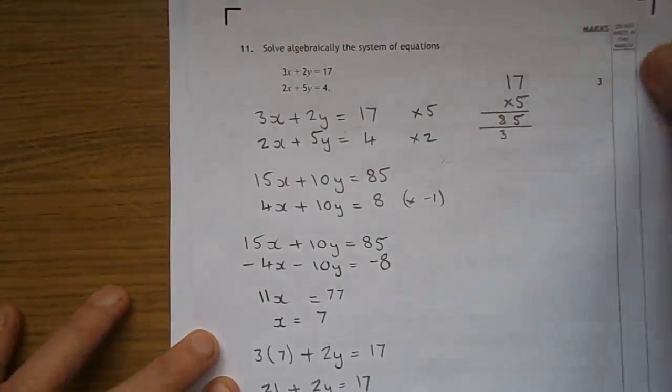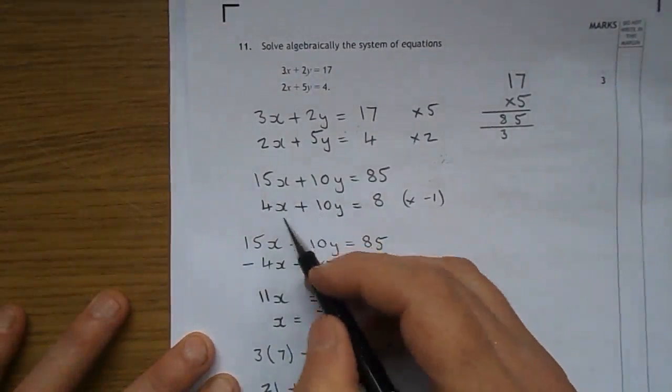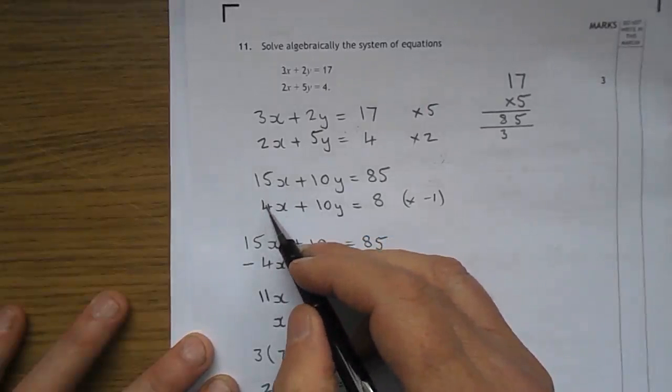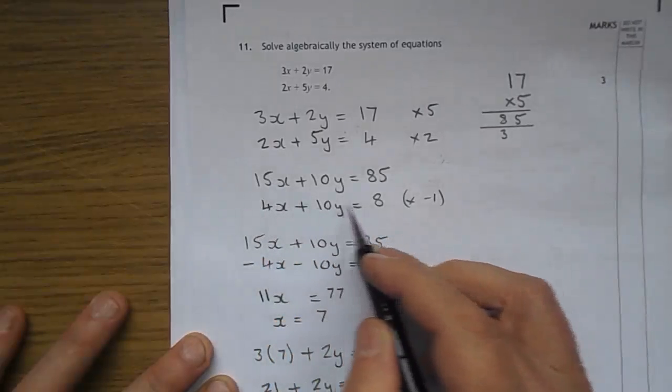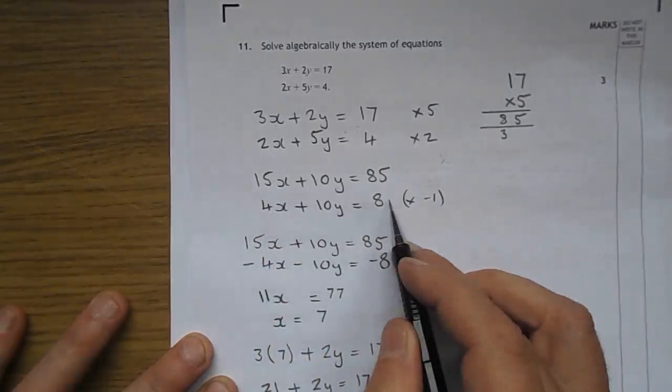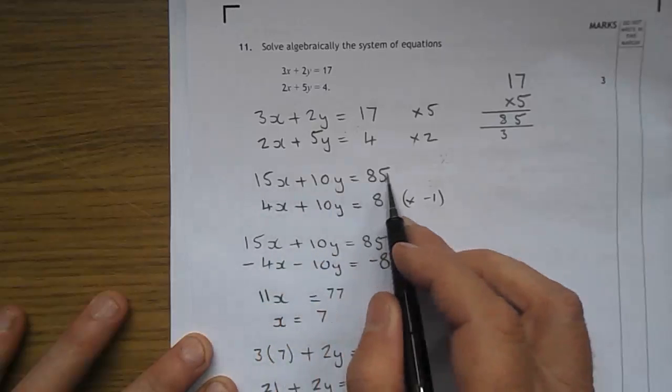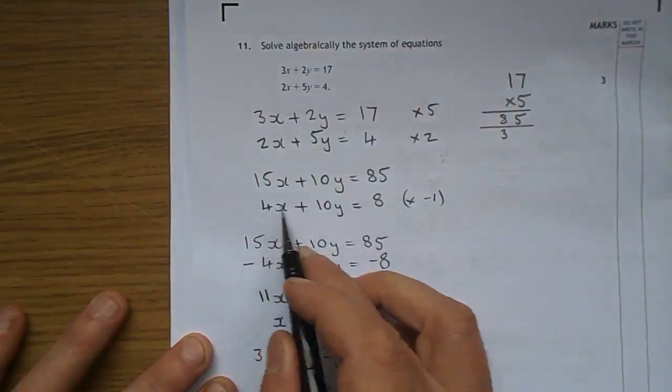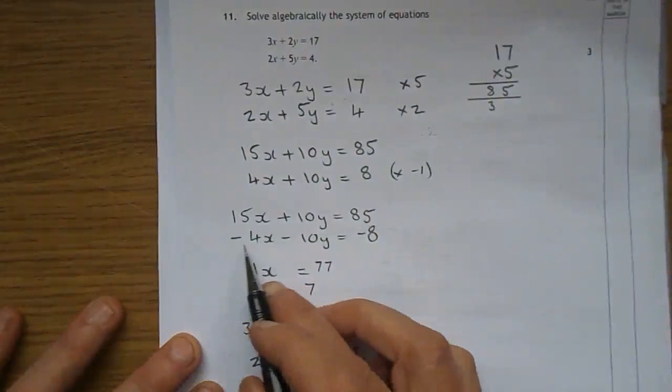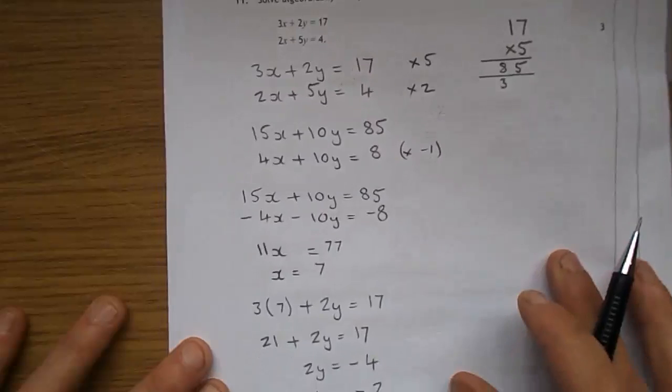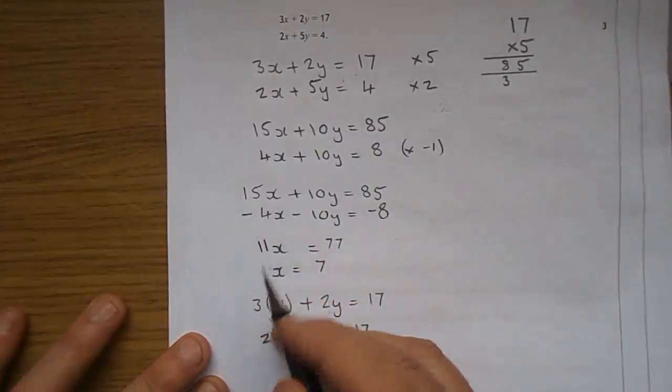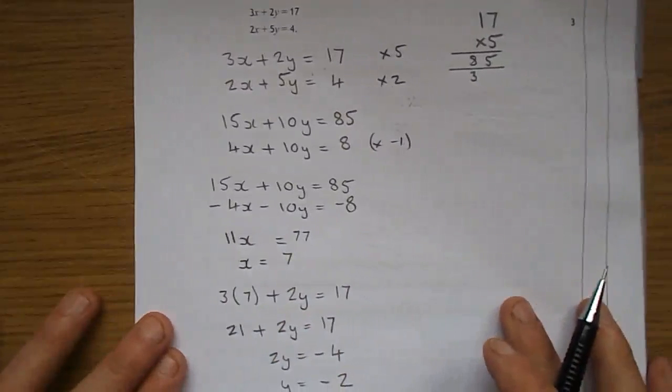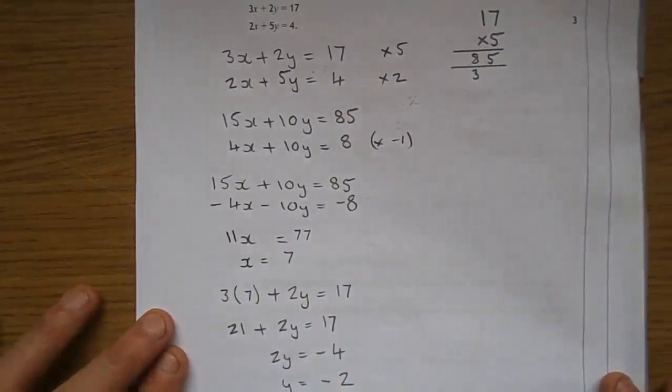My tactic is, would I rather do 15 take 4 or 4 take 15? I'd rather do 15 take 4, so this one has to be negative. I've multiplied this line by minus 1 and written it here. 15x take 4x is 11x, plus 10y take 10y they've gone, 85 take 8 is 77.